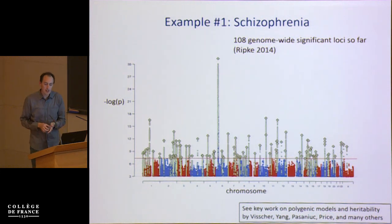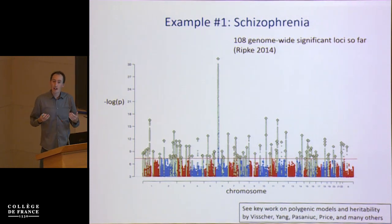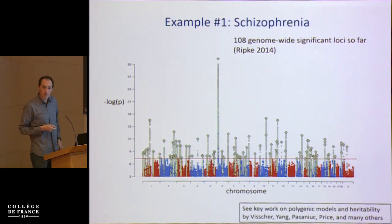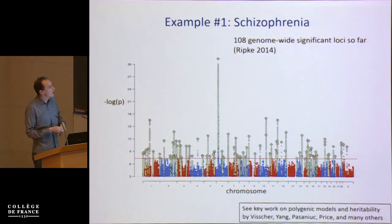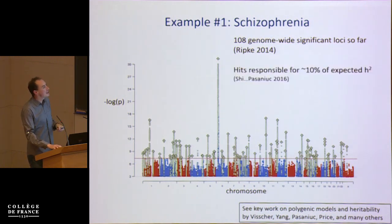To begin with, I'll start with schizophrenia — a disease we really don't understand well at the molecular level. There's been an enormous amount of work to perform mapping for variants that affect schizophrenia risk. In the latest meta-analysis using about 250,000 individuals, they identified 108 genome-wide significant loci. This is an extraordinary accomplishment, though a small number of these loci have been characterized molecularly. Together, these hits only explain about 10% of the expected heritability for schizophrenia.